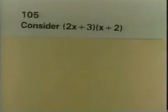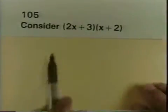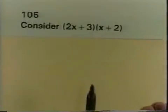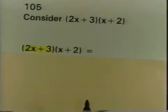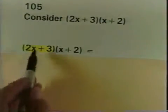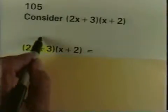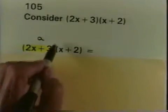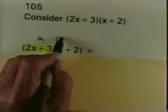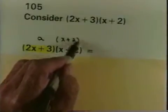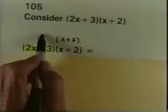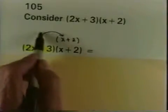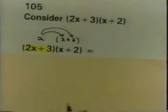What I'm going to do is treat 2x plus 3 as a single factor. I've shaded to show you what I'm going to do. I'm going to treat 2x plus 3 as if it is the factor a, so I have a times x plus 2. By the distributive property, it would be a times x and a times 2.